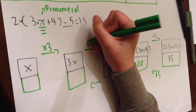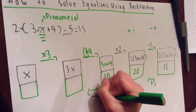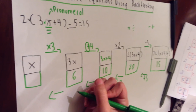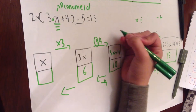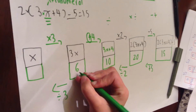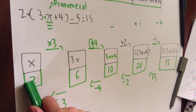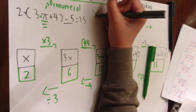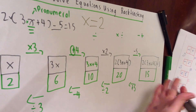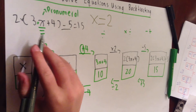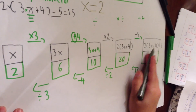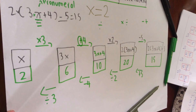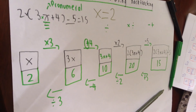Now we do another arrow, and the opposite of a plus is a minus, so minus 4. So 10 minus 4 is 6. Now we do another arrow, and what's the opposite of times? A divide. So divide that by 3. So 6 divided by 3 equals 2. Now we have our output number, the last number we have. So now we know the value of x — x equals 2. Basically, if you have a question like this and you want to find the value of the pronumeral, you do a flowchart, then you do backtracking and do the opposites of the operations. I hope you now know how to solve equations using backtracking. Thank you, bye.